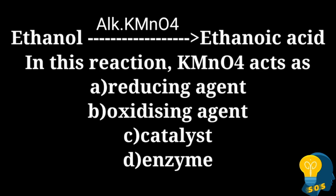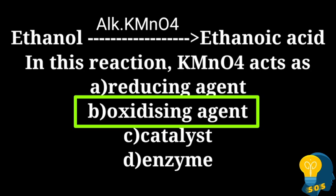The next question is: ethanol is converting into ethanoic acid in the presence of alkaline KMnO4. In this reaction, KMnO4 acts as — option A: reducing agent, option B: oxidizing agent, option C: catalyst, option D: enzyme. Alkaline KMnO4 is acting as an oxidizing agent, and this is an oxidation reaction. The conversion of ethanol into ethanoic acid is an oxidation reaction, so the correct answer is option B.